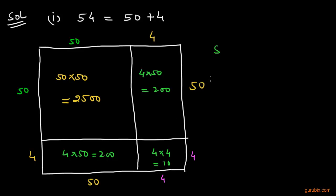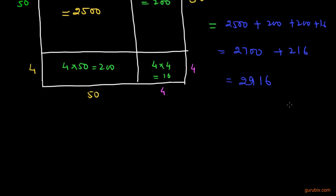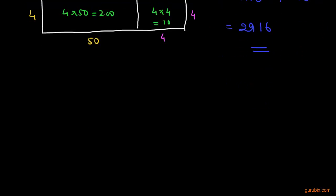Now we shall add the areas of all 4 parts of the square to find the square of 54. So the square of 54 is equal to 2500 plus 200 plus 200 plus 16, which means 2916. So the square of 54 is 2916.